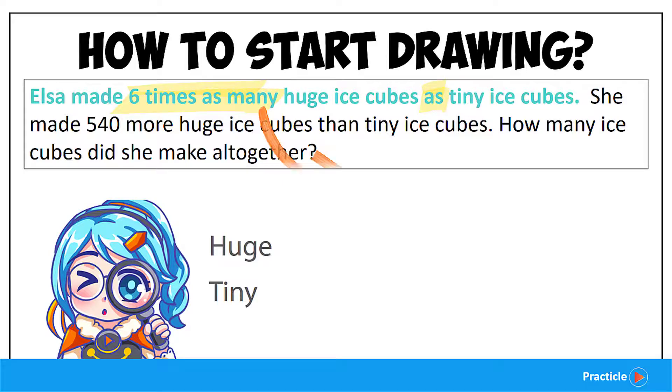Do you know how much six times one is? Six times one equals six, correct? So six times of one unit is six units.